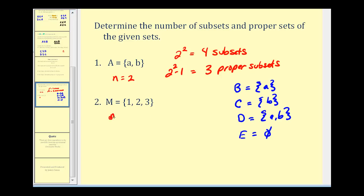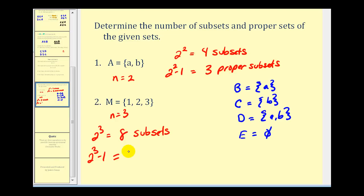For number two, we have n equals three, so 2^3 = eight subsets, and 2^3 − 1 = seven proper subsets. You may want to pause the video and see if you can list all of them.